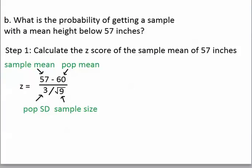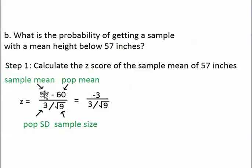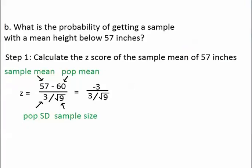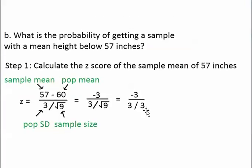So what we need to do is subtract on top, subtract 57 by 60, and it comes out to negative 3. Then we divide 3 by the square root of 9 on the bottom. First we need to find what the square root of 9 equals. The square root of 9 equals 3.